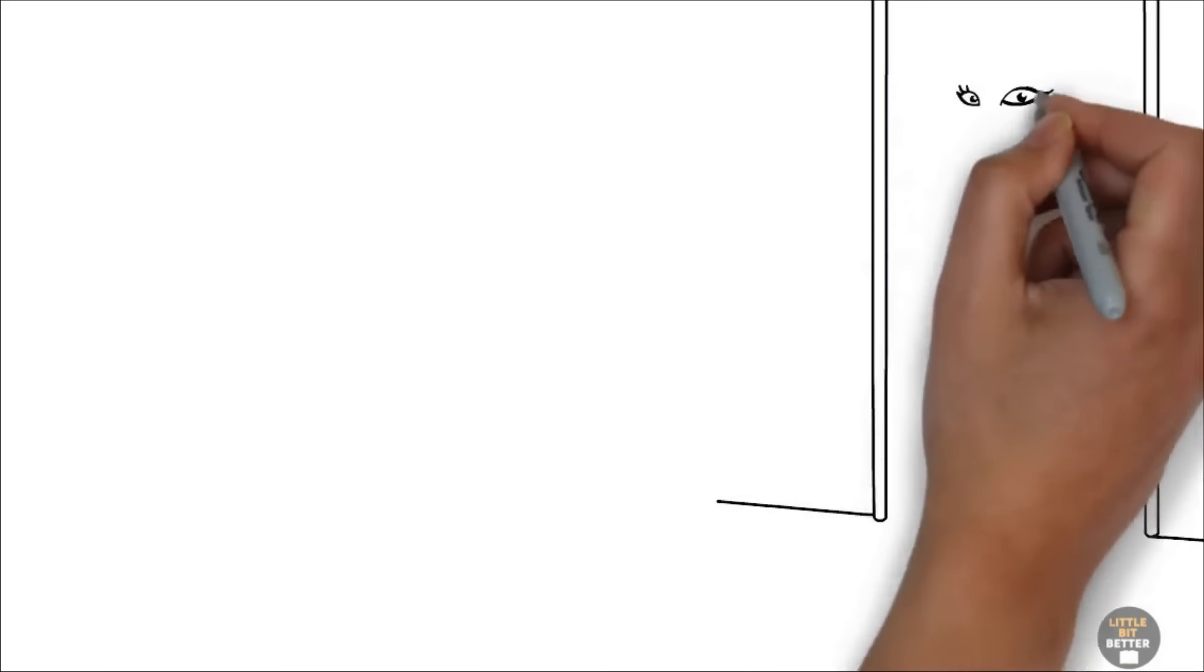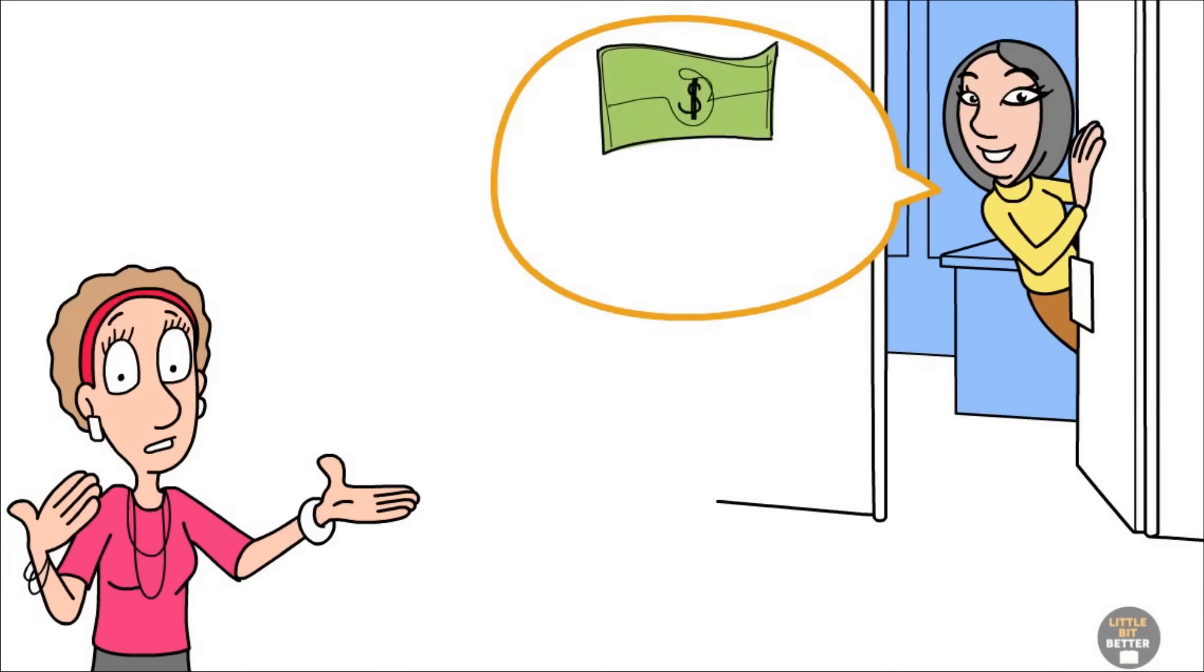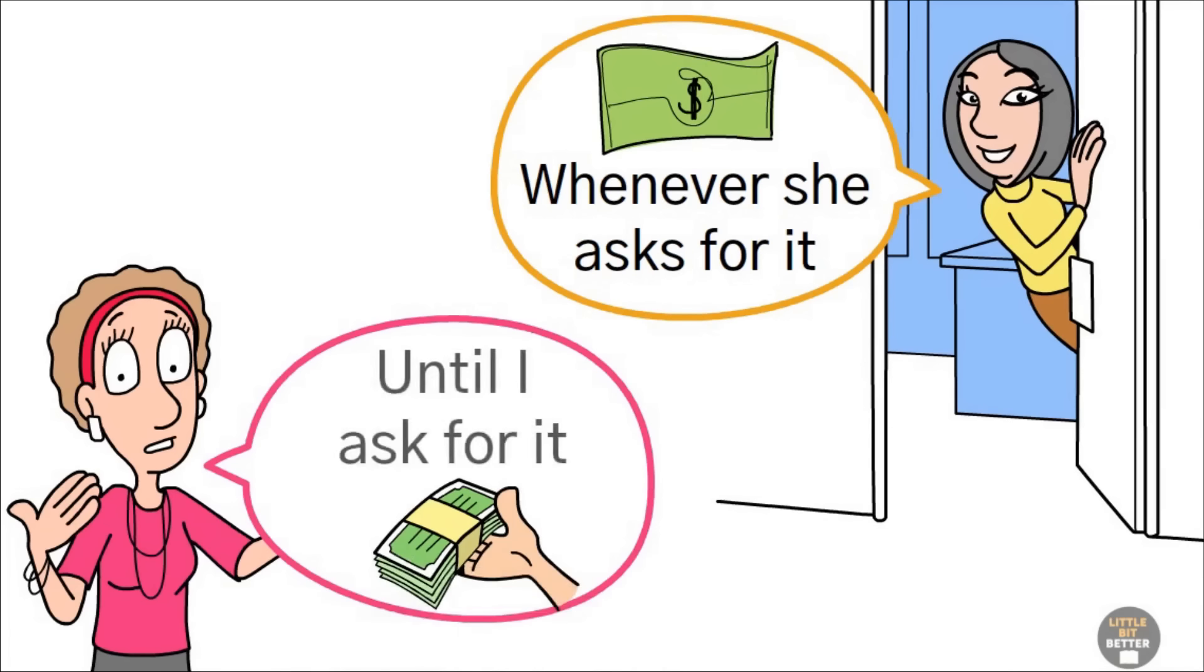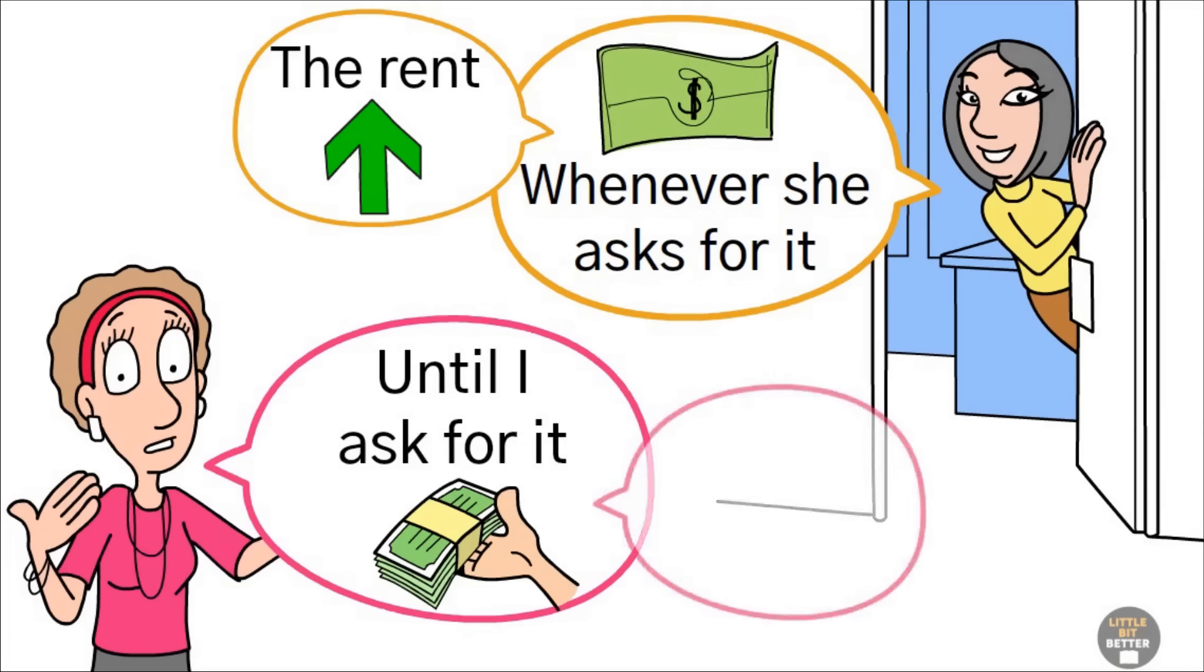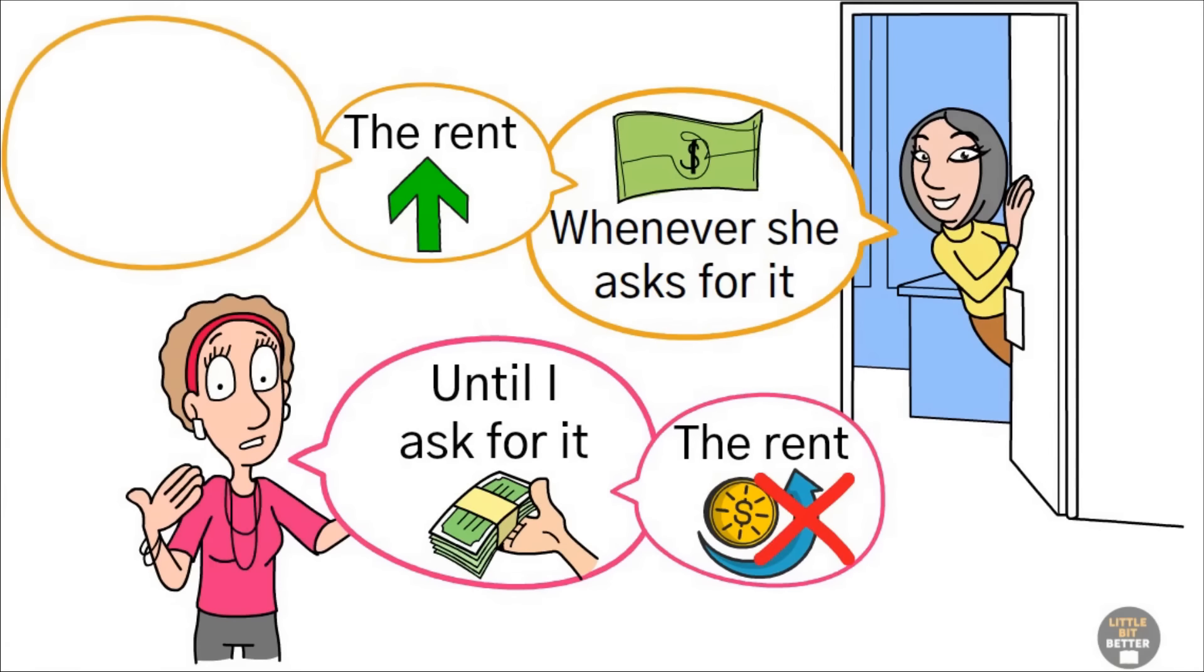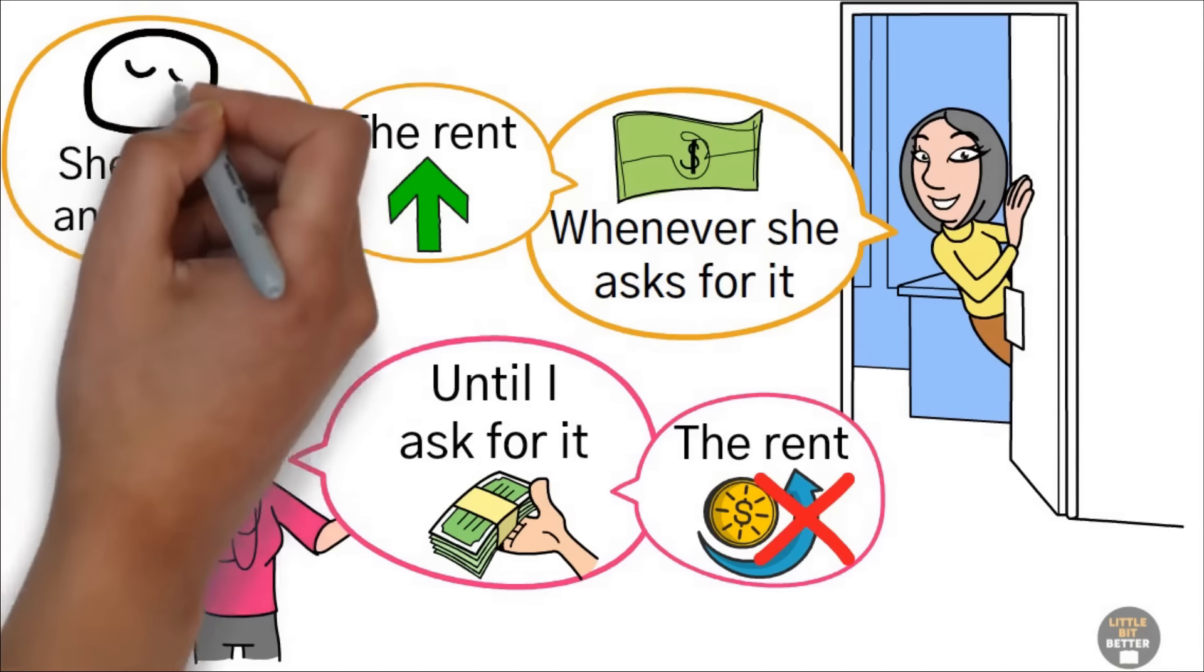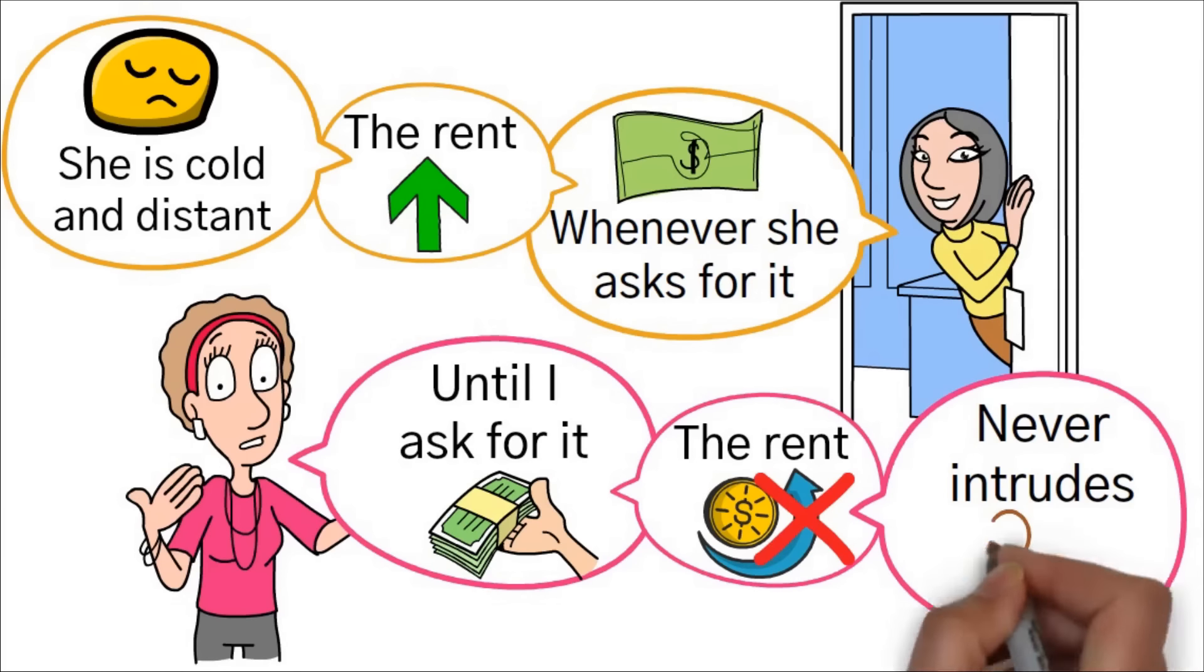Here's how perceptions of the same thing can be different. Tenant: I always pay rent whenever she asks for it. Landlord: she never pays until I ask for it. Tenant: the rent is too high. Landlord: the rent has not been increased for a long time. Tenant: she is cold and distant, never asks how I am. Landlord: I'm a considerate person who never intrudes tenant's privacy.